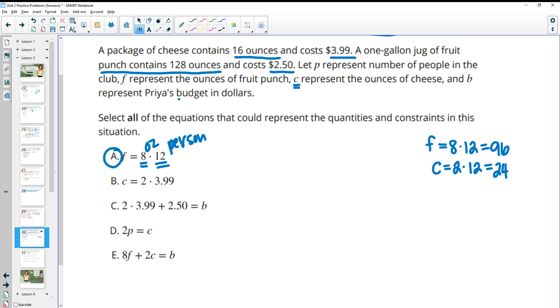Then for part B, this says C is the ounces of cheese. So C should be the number of ounces of cheese, which two is the number of ounces, but $3.99 is the cost. So this is giving us the cost really of two packages of cheese, which is not what C represents. C represents the ounces of cheese, not the cost.